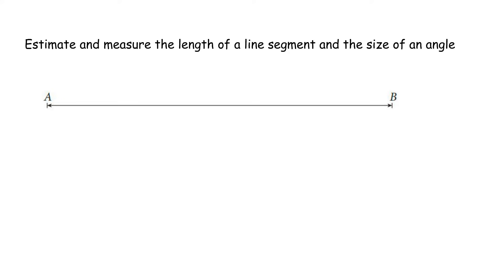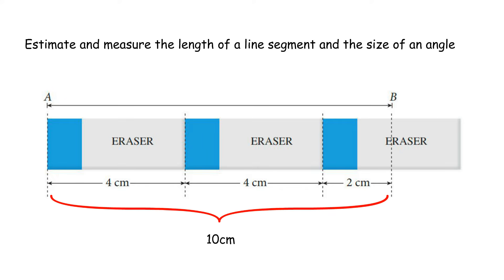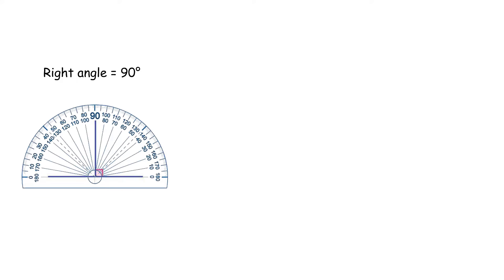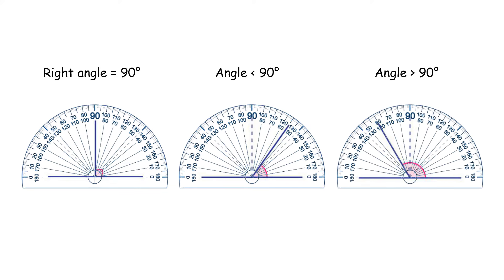The length of a line segment can be estimated by comparing its length with objects of a known length. If an eraser is known to have a length of 4 cm, then the length of line AB can be estimated as approximately 10 cm. The size of an angle can be estimated by recognizing the right angle first. An angle that appears less than a right angle is less than 90 degrees, and an angle that appears more is greater than 90 degrees.